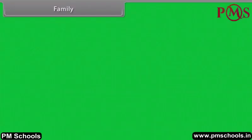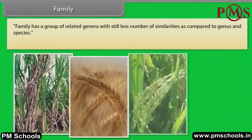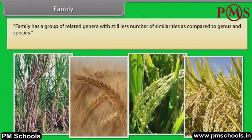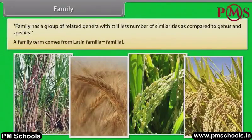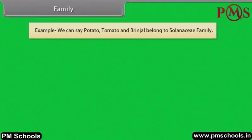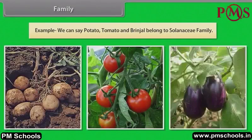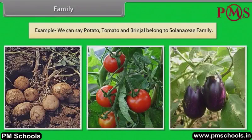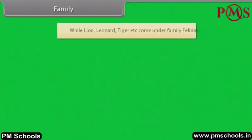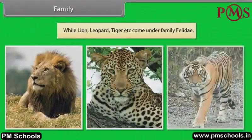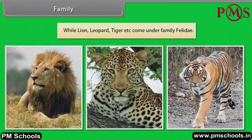Family has a group of related genera with still fewer similarities as compared to genus and species. The family term comes from Latin 'familia', which means familial. For example, potato, tomato and brinjal belong to the Solanaceae family, while lion, leopard, and tiger come under the family Felidae.